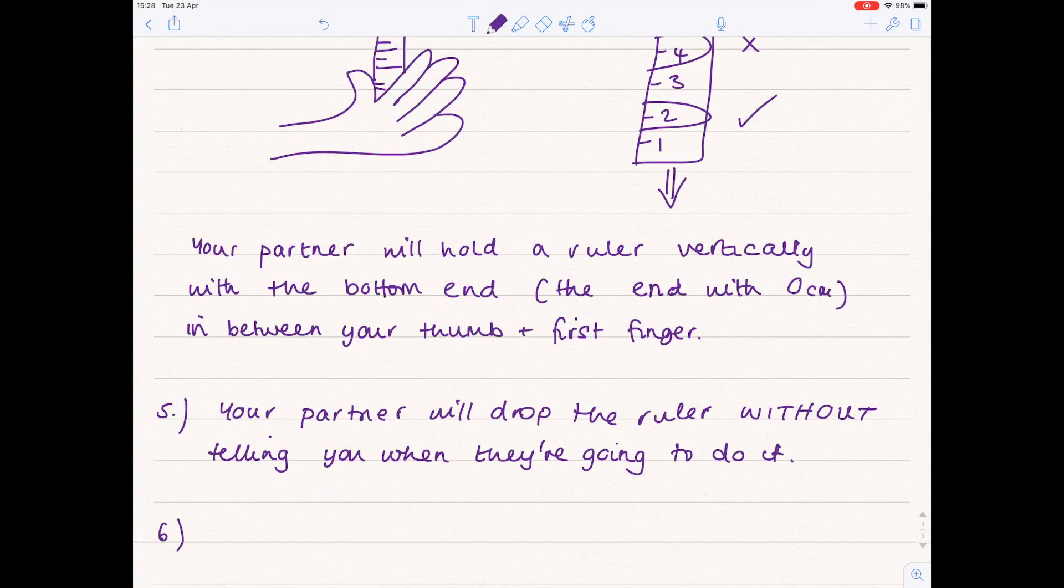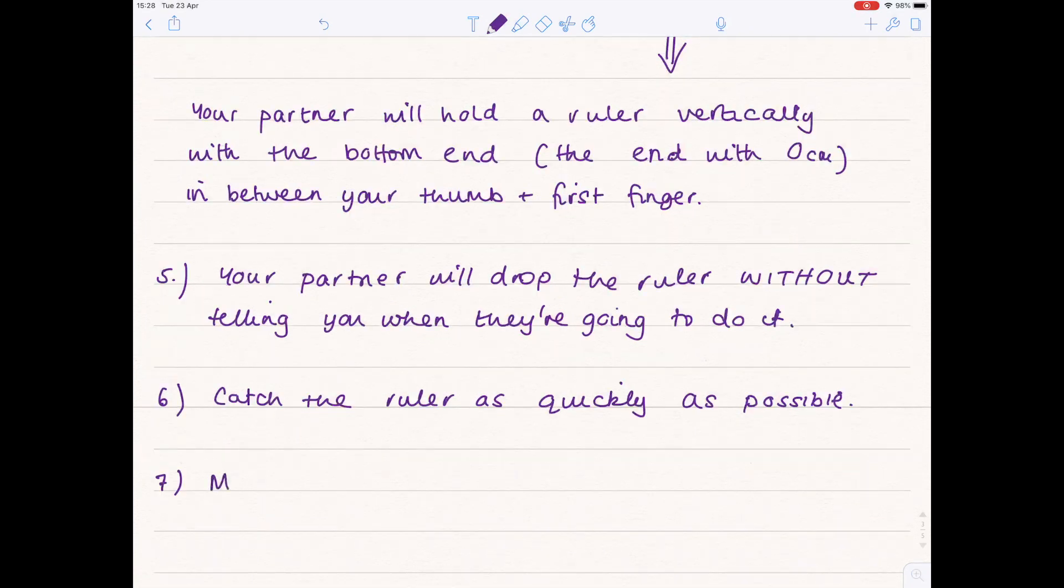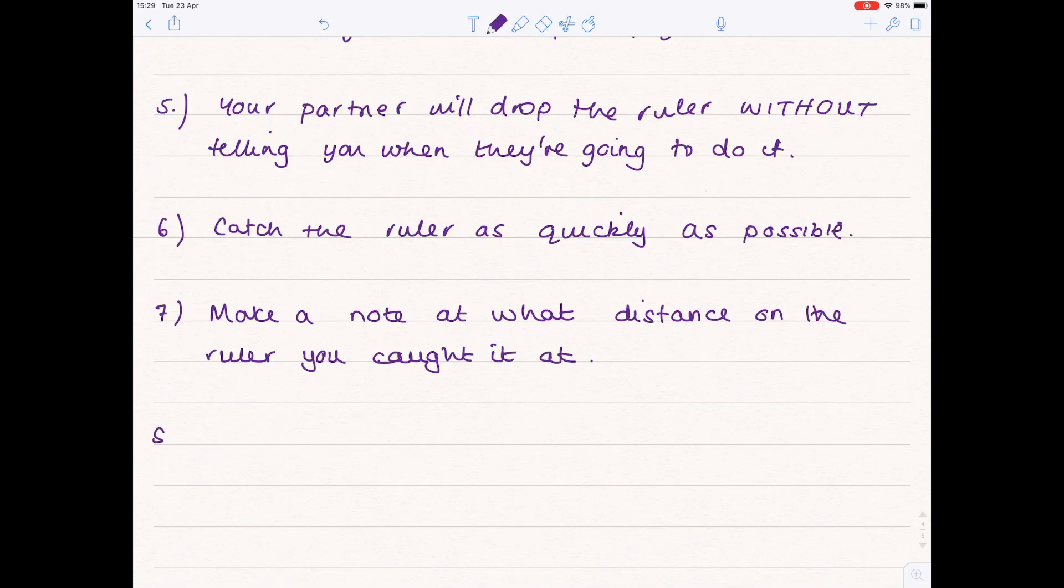So your job is to catch the ruler as quickly as possible and then make a note at what distance on the ruler you caught it at. And really you're just going to have a little rest and repeat. And you should find that the more you repeat this process the better you get and the closer to the zero end that you catch the ruler.